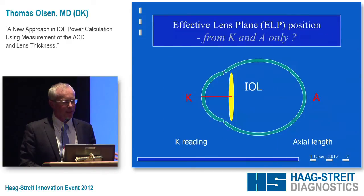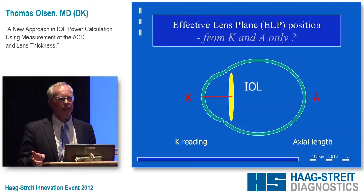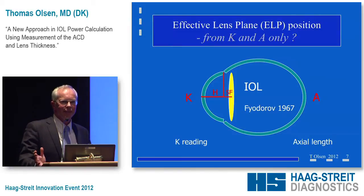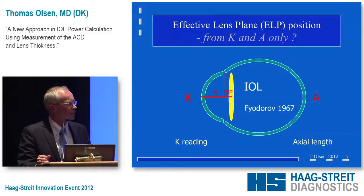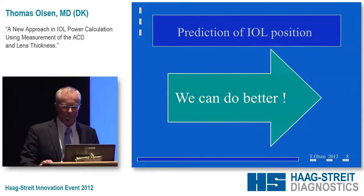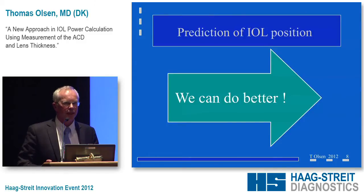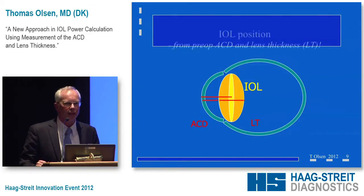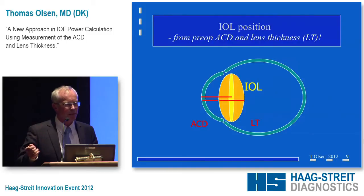From the K reading and axial length, formulas come up with some estimate of the ELP or post-op ACD. This is a major source of error because the axial length error is so small. The concept of the corneal height formula was invented by Fyodorov in 1967 — nothing new. This formula was developed at a time with ultrasound and iris clip lenses, so it's not necessarily useful for us today. I would say we can do better.